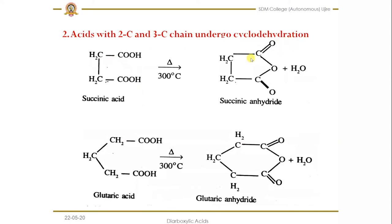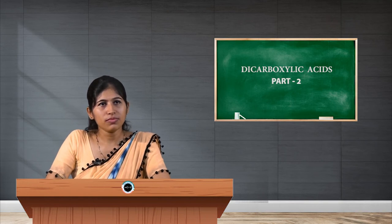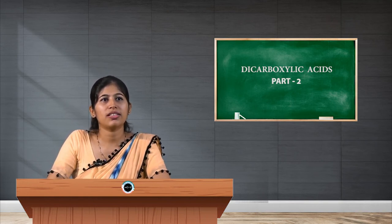By the removal of a water molecule, which takes place when heated at around 300 degree Celsius — one hydroxyl group from one end and a hydrogen from the other — by the removal of this water molecule, formation of a new bond takes place. As a result, we get the corresponding anhydride: succinic acid gives succinic anhydride, and glutaric acid gives glutaric anhydride.